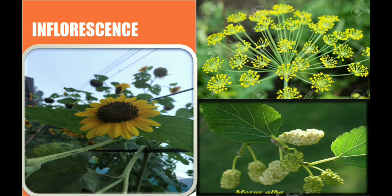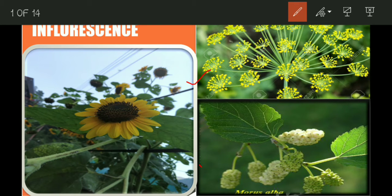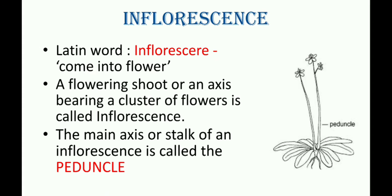Good morning students. You can see beautiful pictures in this slide — there is sunflower, there is fennel, there is mulberry plant. All these plants have flowers on their branches. The group of these flowers, the arrangement of these flowers on the stem, is called inflorescence. Today we are going to learn about inflorescence.